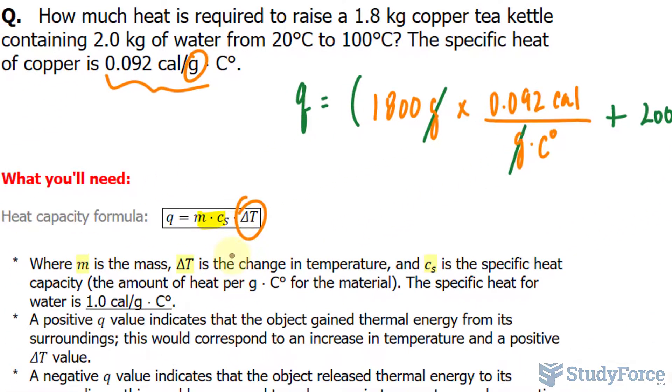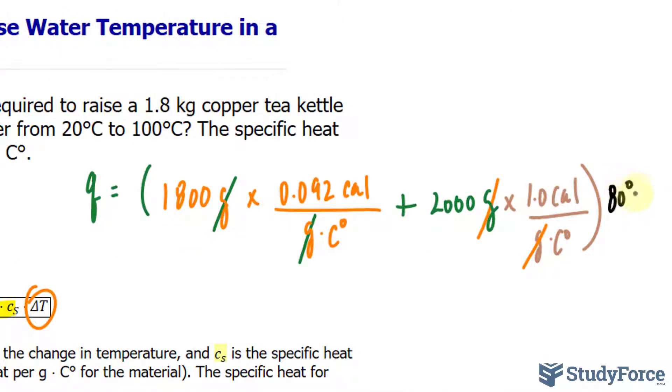And we multiply that to the difference in temperature. So 100 minus 20 is 80 degrees Celsius. So I'll write down 80 degrees Celsius. And the units for Celsius will cancel out, leaving us with a final unit of calories.